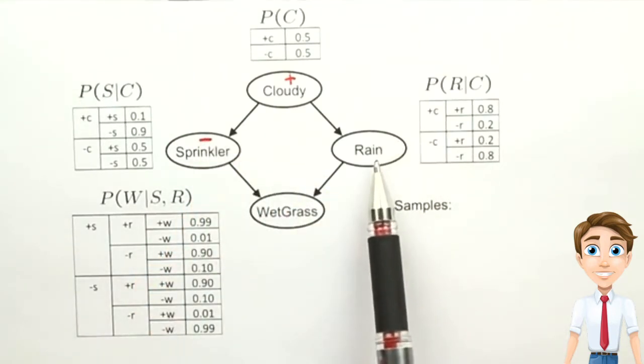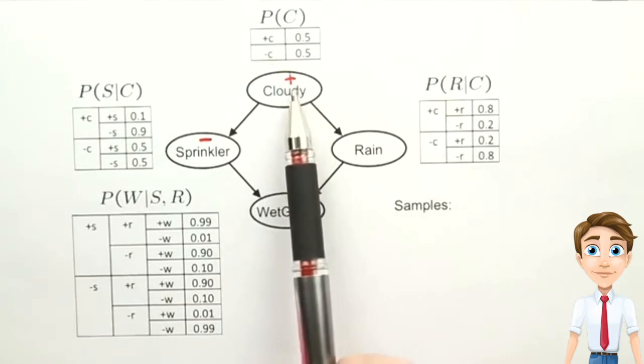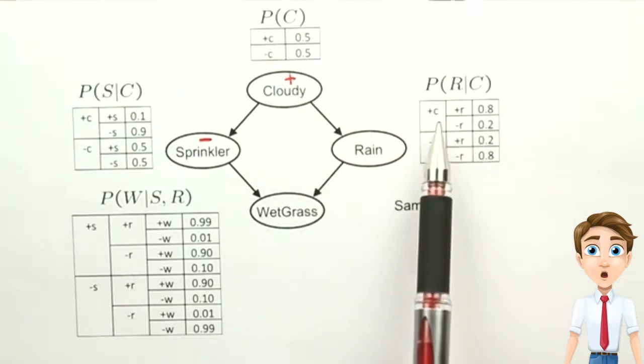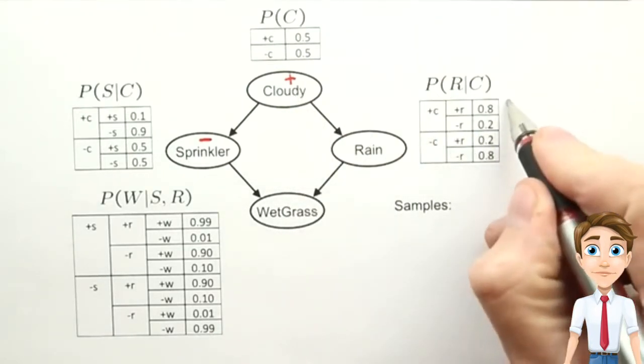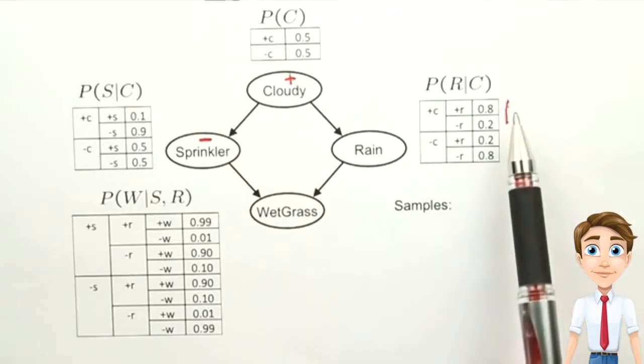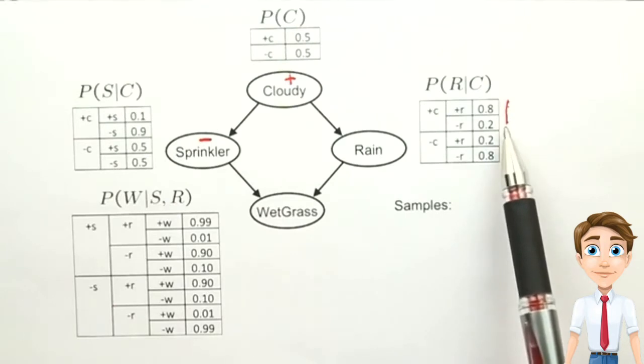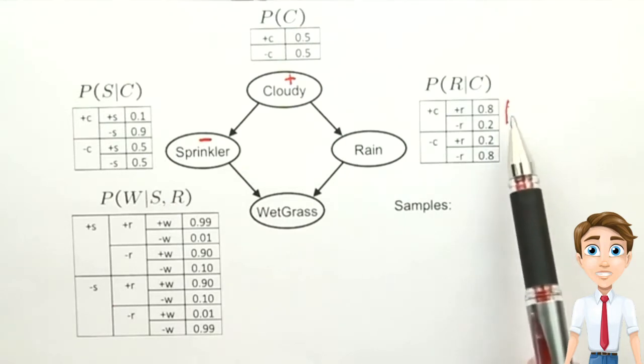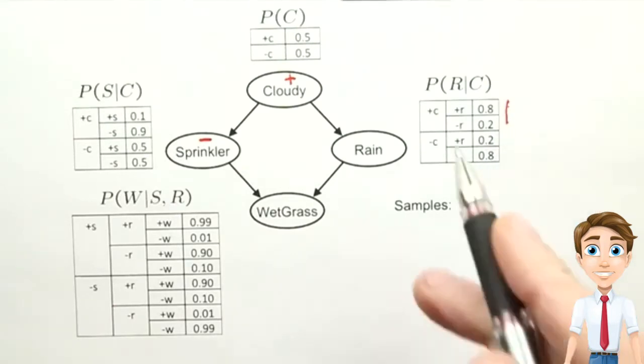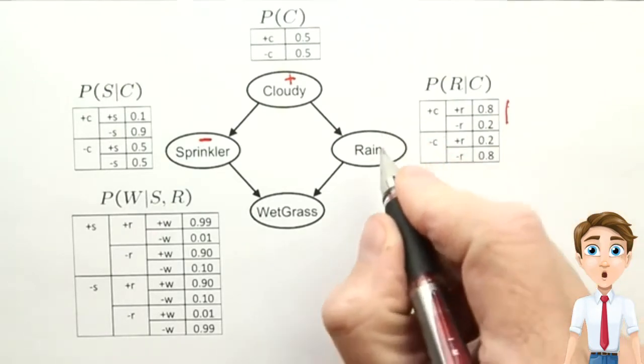Now let's jump over here, look at the rain variable. Again, the parent, cloudy, is positive. So we're looking at this part of the table. We get a 0.8 probability for rain being positive and a 0.2 probability for rain being negative. Let's say we sample that randomly, and it comes up rain is positive.